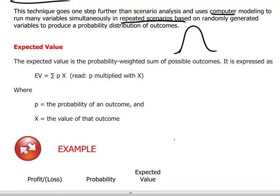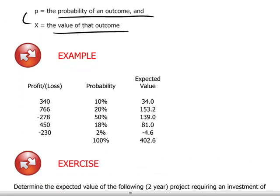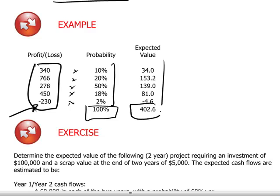Another quantitative technique is called the expected value, defined as the product of the probability of a given outcome multiplied by the value of that outcome. This is best seen in an example: if you take a series of possible profit outcomes — including a loss — with different probabilities that add up to 100%, you multiply these across and sum the numbers to get an expected value of $402.6.